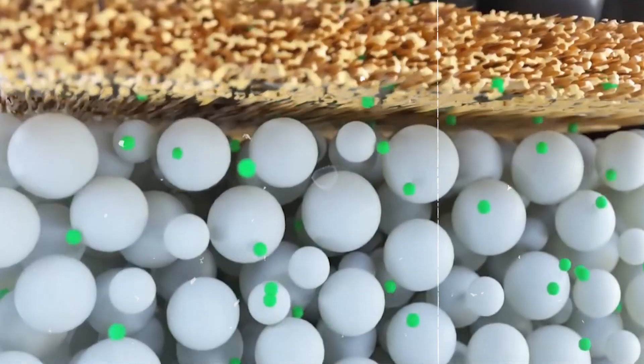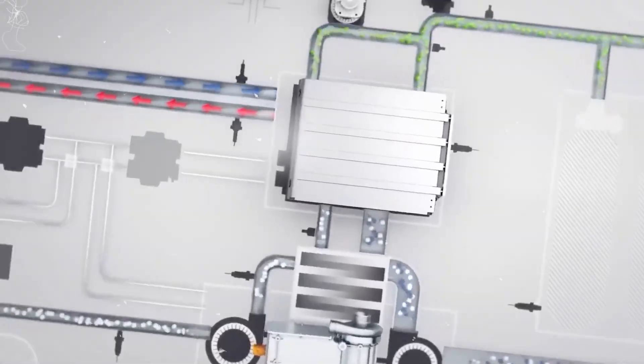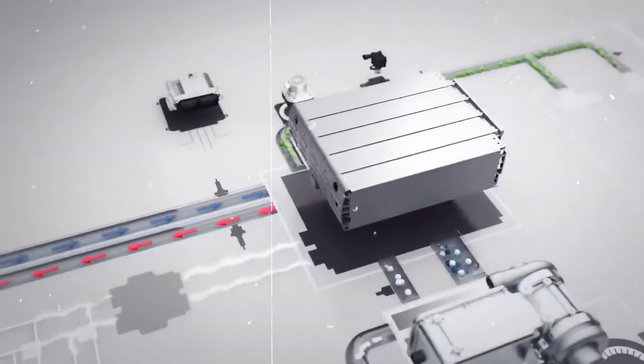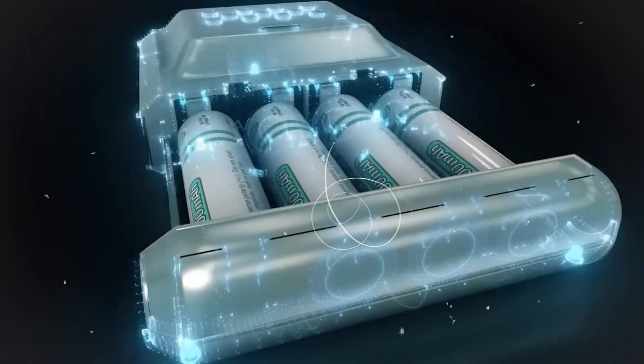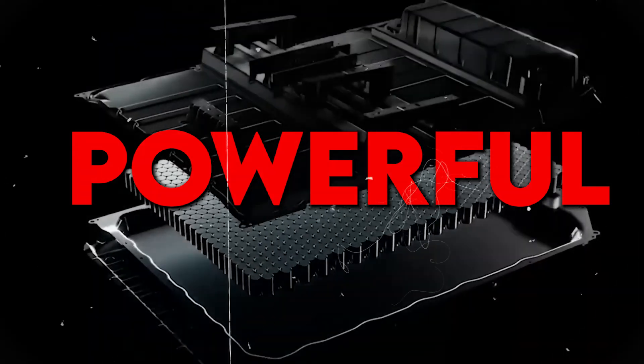The electrolyte facilitates the movement of lithium ions. In the case of customary lithium batteries, this is usually a liquid or gel. Unlike other manufacturers, Toyota's batteries have a particular kind of solid electrolyte. It makes them more powerful than the other.